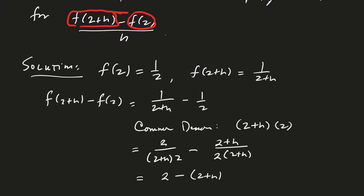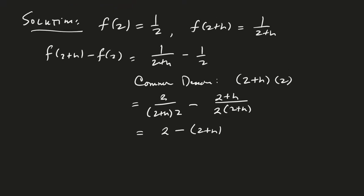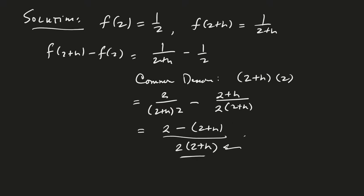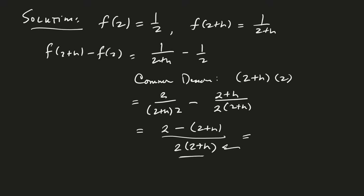Divided by, and then I just write down my denominator. Here's a hint: Leave your denominator in factored form. Don't multiply it out unless you absolutely have to. That'll save you a lot of work. So now let's simplify that. That's going to be 2 minus 2 minus h divided by 2 times (2+h).